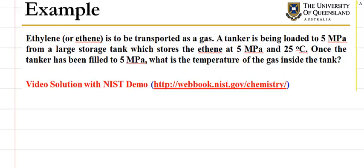Hello. The example we're looking at here in this video is the case of filling up a tanker with ethylene or ethene. So the ethene is being supplied from a huge storage tank that's kept at 5 megapascals and 25 degrees Celsius, and we're taking the gas from that and putting it into a tanker, so like a road tanker or a small storage tank or something like that.